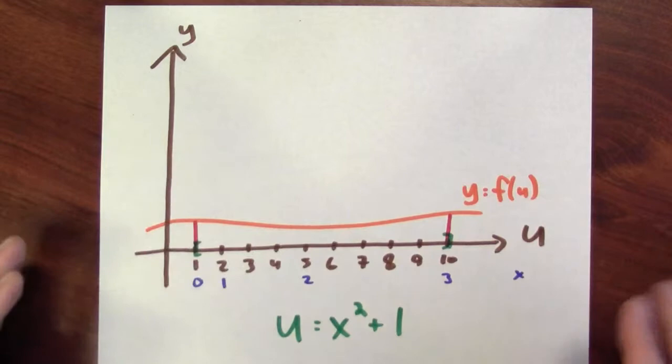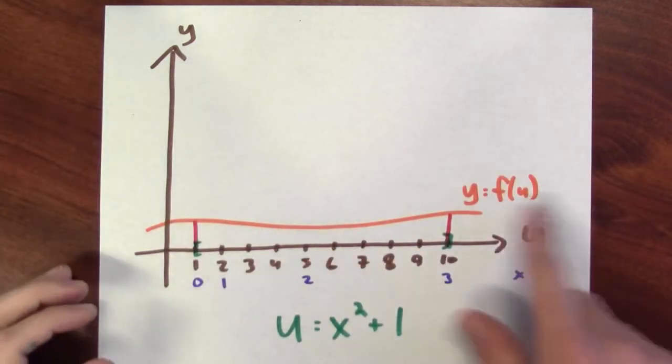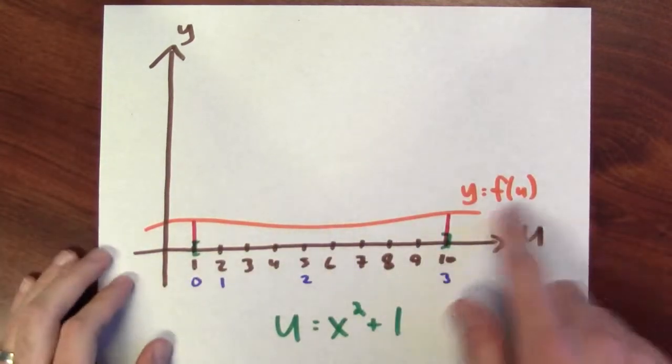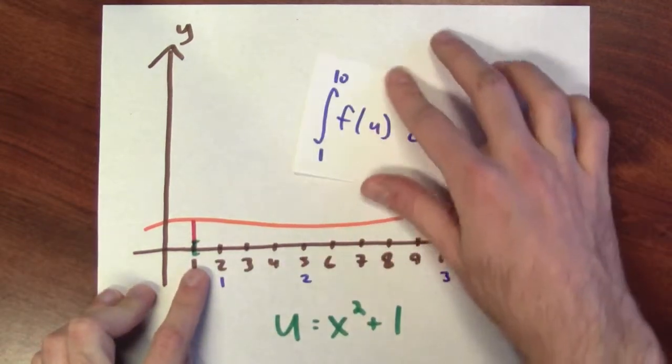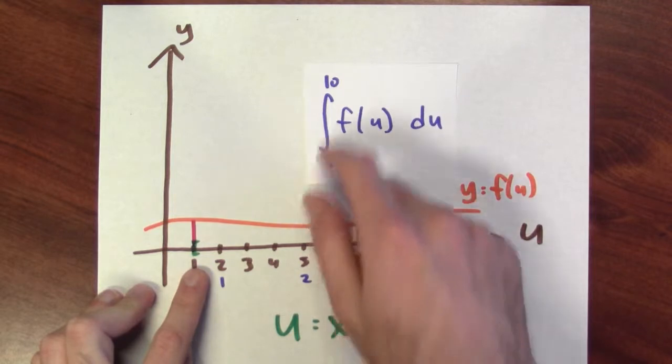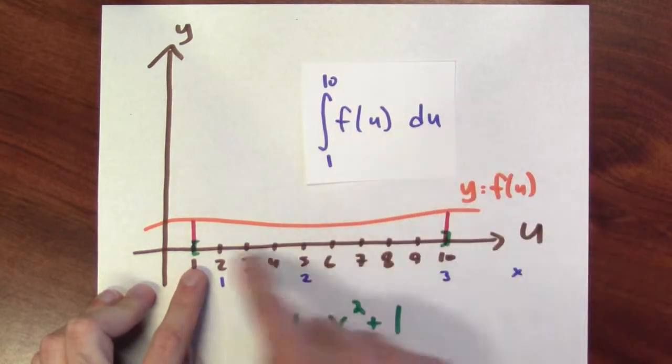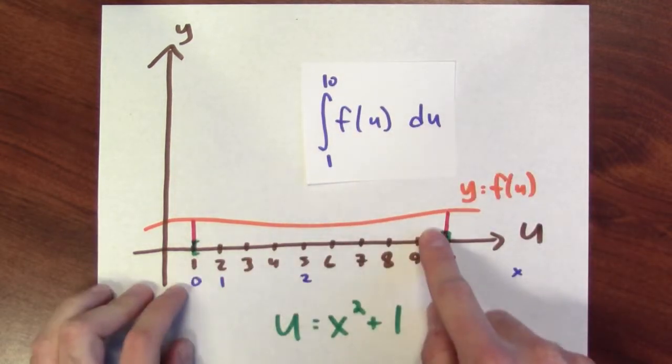Well, to gain some insight into this, here's a random graph that I made of some function that's nearly constant, but the function I'm calling f. And this area in here is the integral from 1 to 10 of f(u) du, right? That's this area in here.